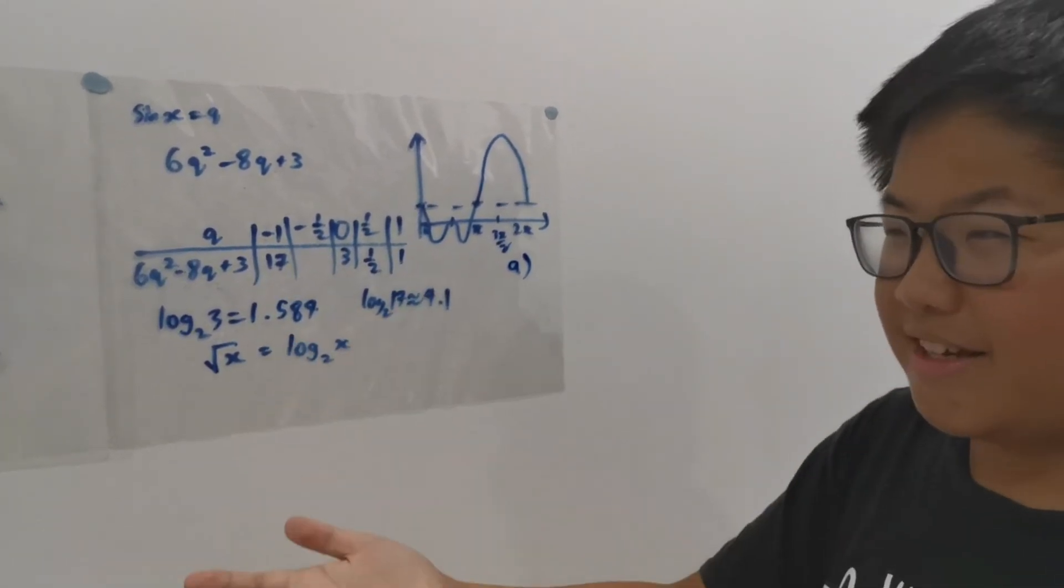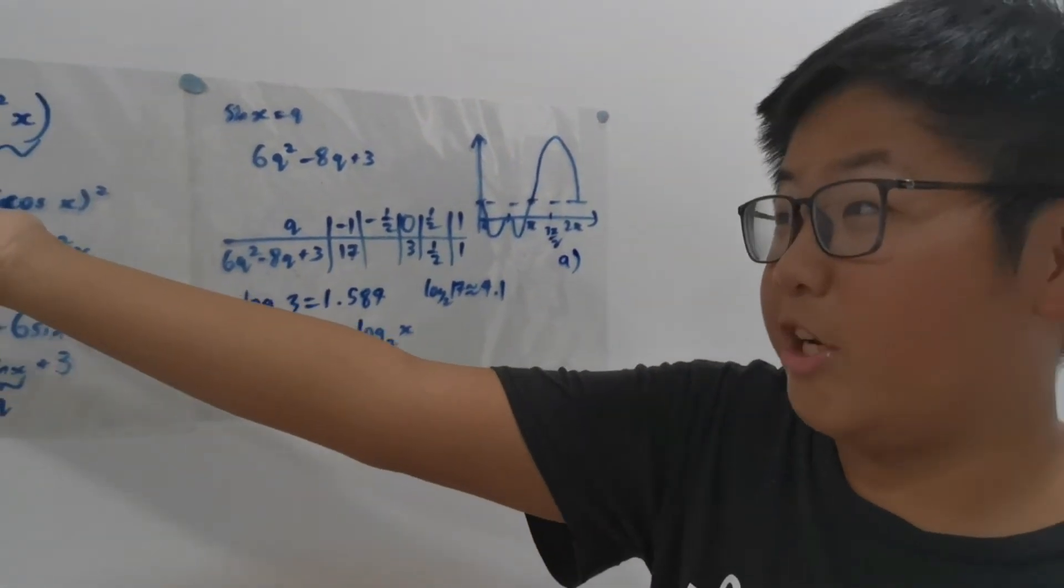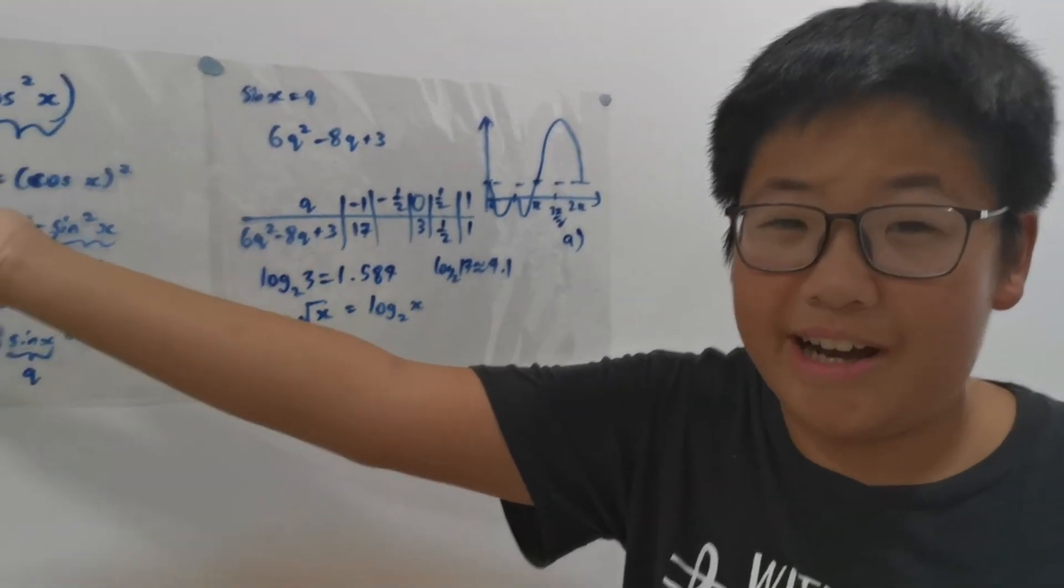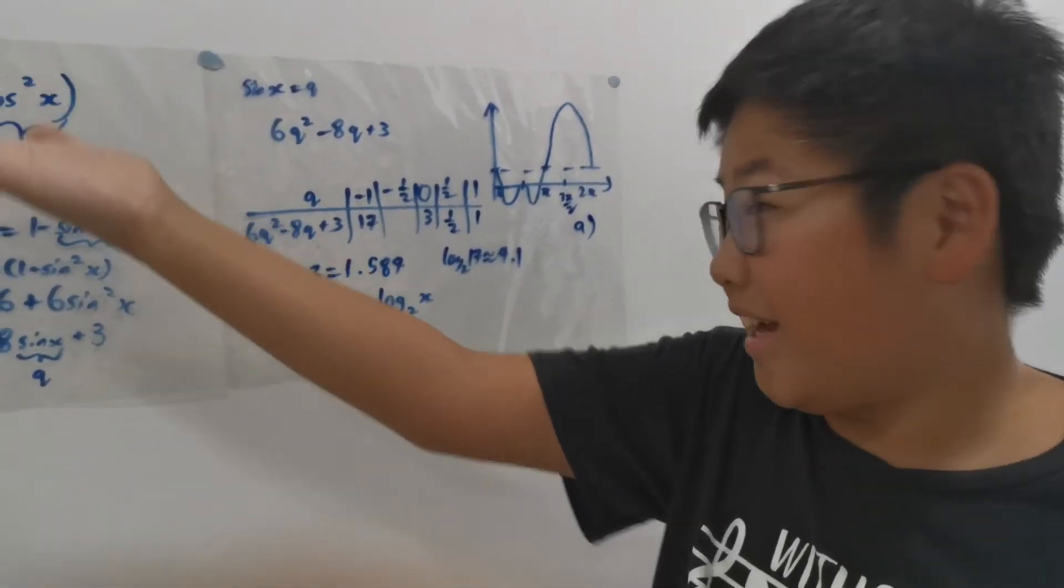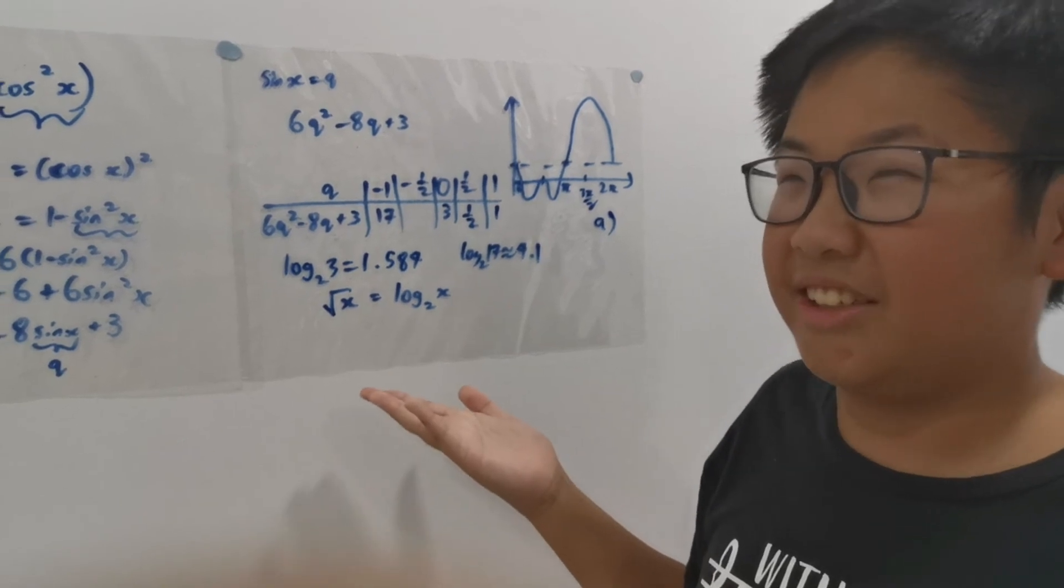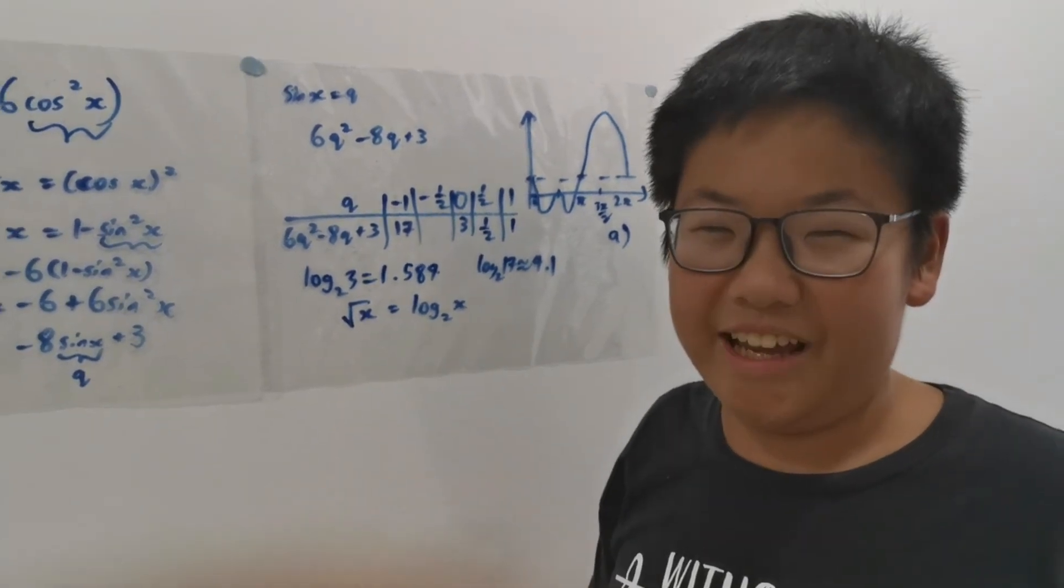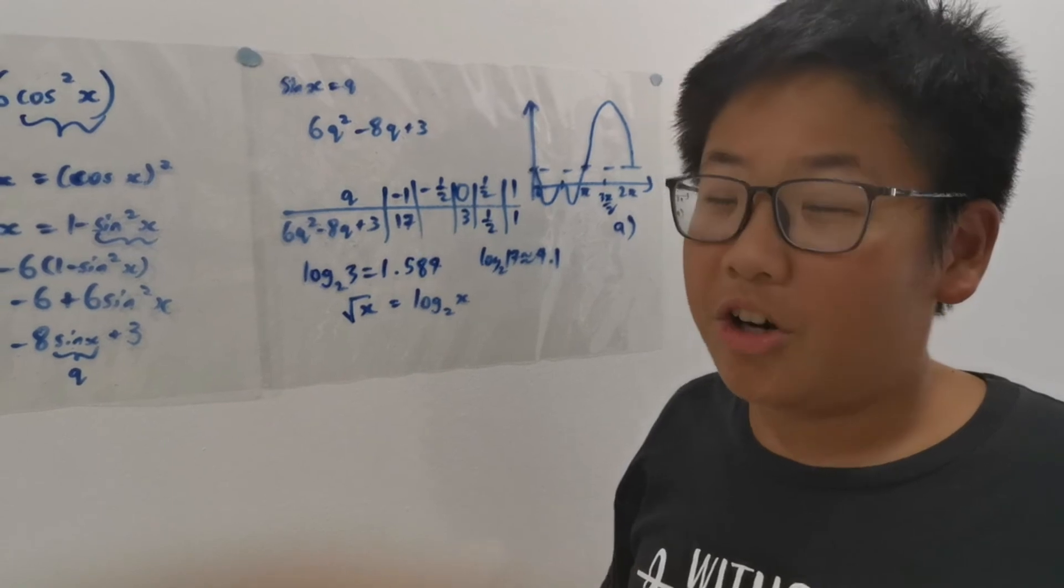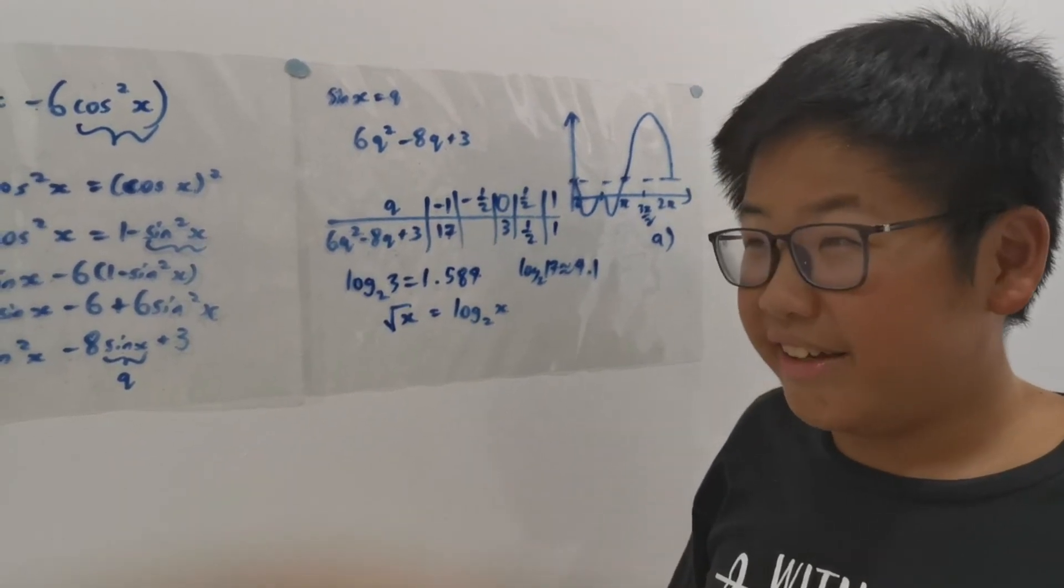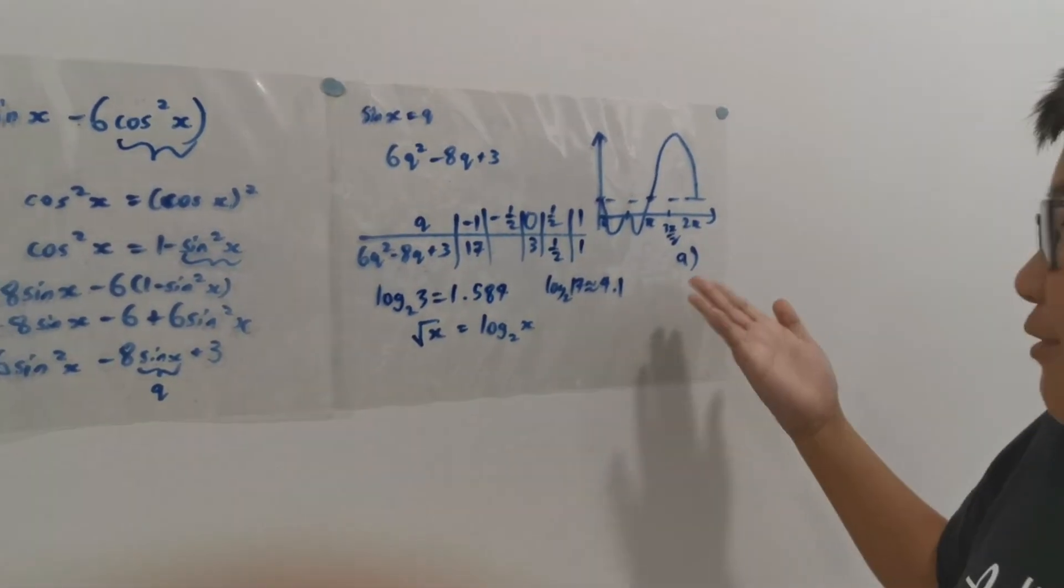And there you have it. This rather formidable equation, using a trigonometric identity and an identity about logarithms, which is my favourite logarithm, actually log x, which we talked about, actually makes a really beautiful looking graph.